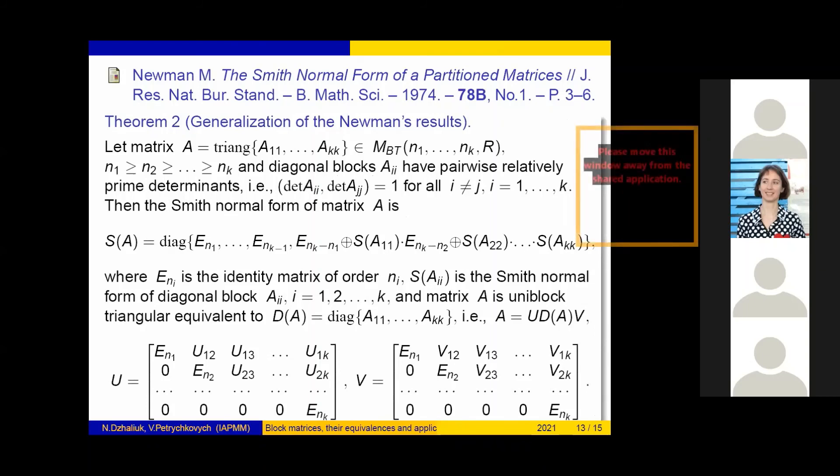The next result, Theorem 2, is a generalization of the result of Newman 1974. Let matrix A be a block triangular matrix with diagonal blocks A_ii having pairwise relatively prime determinants. Then, the Smith normal form of matrix A, S(A), has the form where E_ni is the identity matrix of order n_i, S(A_ii) is the Smith normal form of diagonal blocks A_ii. And matrix A is uniblock triangular equivalent to D(A), that is A = UD(A) where U is a uniblock triangular matrix.